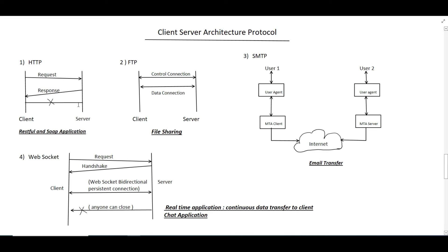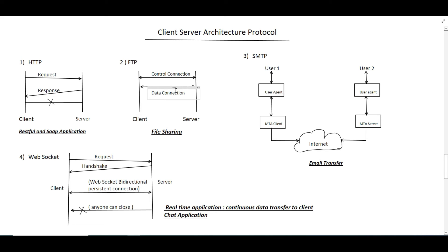HTTP can be used for RESTful and SOAP applications or web services. The second protocol is FTP — File Transfer Protocol. In FTP, two connections are created between the client and server: a control connection and a data connection. Once the data transfer is done, the connection is terminated. FTP can be used for file sharing.